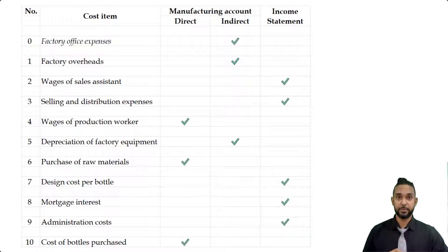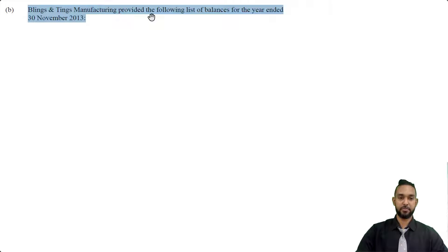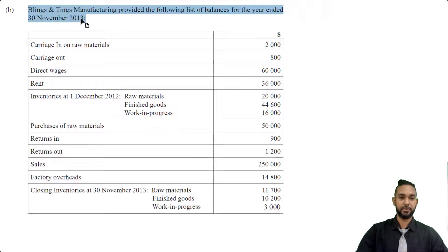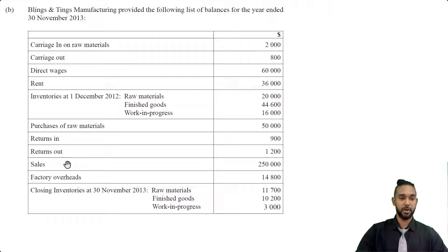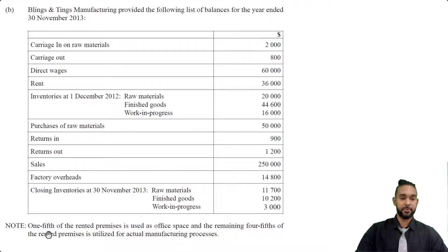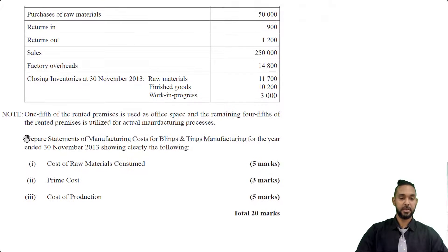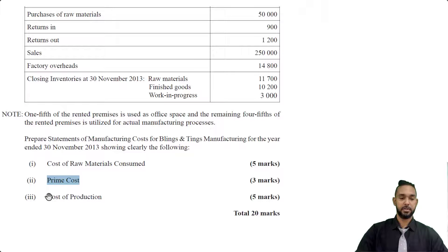Let's take a look at part B. Blings and Things Manufacturing provided the following list of balances for the year ended 30th November 2013: carriage in on raw materials, carriage out, direct wages, rent, inventories at 1st December 2012 — raw materials, finished goods, work in process — purchases of raw materials, returns in, returns out, sales, factory overheads, and closing inventories at 30th November 2013 — raw materials, finished goods, and work in progress. There is one additional note that one-fifth of the rented premises is used as office space and the remaining four-fifths is utilized for manufacturing. We have to prepare a statement of manufacturing costs showing clearly: cost of raw materials consumed, prime cost, and cost of production.